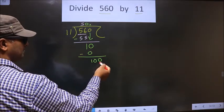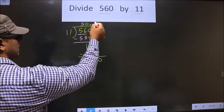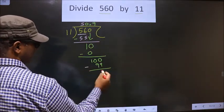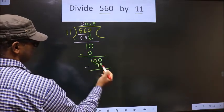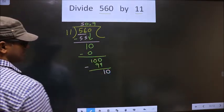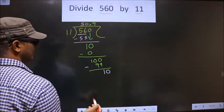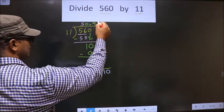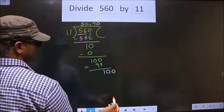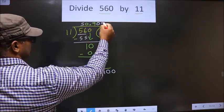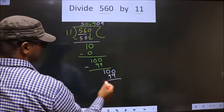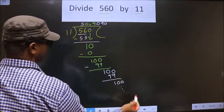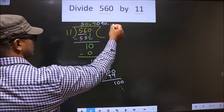Now we get 100. A number close to 100 in the 11 table is 11 nines, which is 99. You subtract, you get 1. 1 is smaller than 11, so you can take 0, making it 10. But 10 is still smaller than 11 — you want one more 0, but you cannot take it directly. So you put 0 in the quotient and 0 again. Now we have 100, and 11 nines is 99 with remainder 1 — and so it goes on.